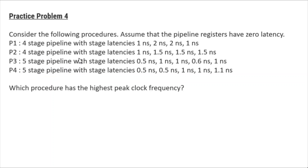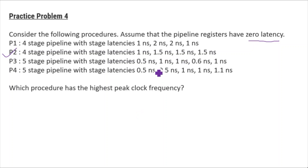Now for practice problem 4: consider the following processors, all with zero-latency pipeline registers. P1 is a 4-stage pipeline with delays 1, 2, 2, 1 nanoseconds. P2 is a 4-stage pipeline with delays 1, 1.5, 1.5, 1.5 nanoseconds. P3 is a 5-stage pipeline with delays 0.5, 1, 1, 0.6, 1 nanoseconds. P4 is a 5-stage pipeline with delays 0.5, 0.5, 1, 1, 1.5 nanoseconds. The question asks which processor has the highest peak clock frequency.